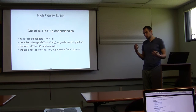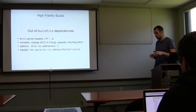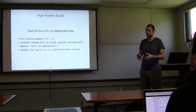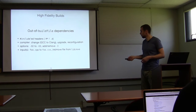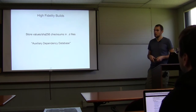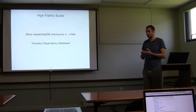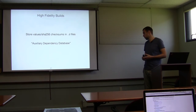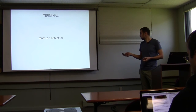To solve this we generalize the .d file into what we call an auxiliary dependency database. We don't just store headers — we store checksums of the compiler and hashed options as well as the actual inputs. So we have a compiler checksum, hashed options, and the actual source inputs. If anything in that set changes, we know we need to rebuild.